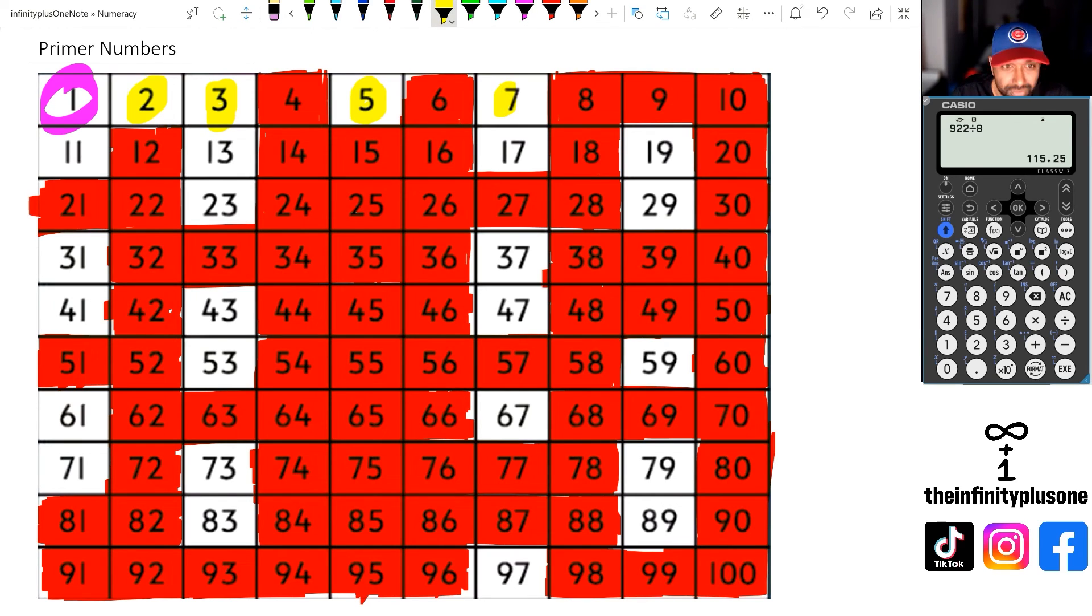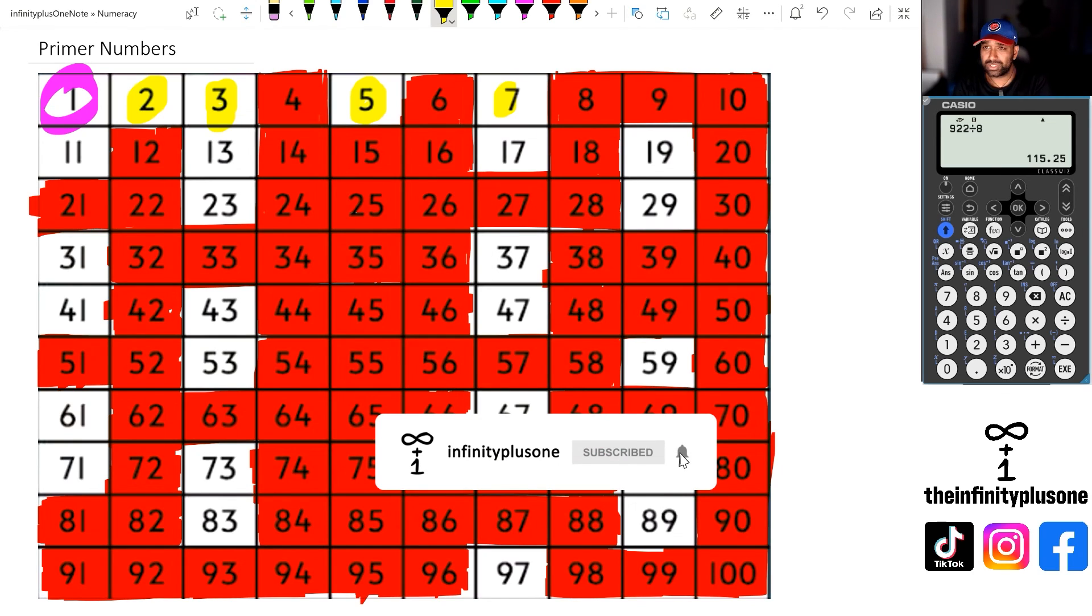But all these other numbers that have not been crossed out, I've kind of put the top line, the two, three, five, seven in yellow there, but every other box that's not colored in red is actually a prime number. That's just a quick little video explaining what prime numbers are.